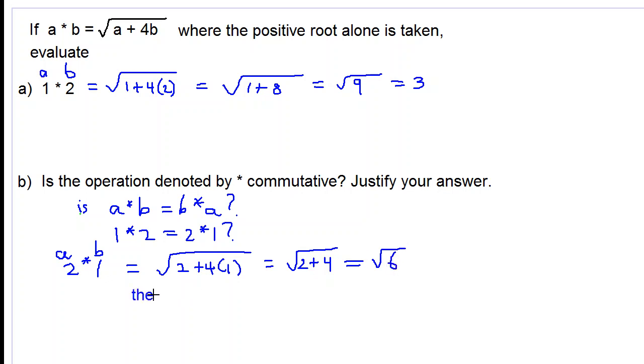Therefore, a star b is not equal to b star a, since 1 star 2 is not equal to 2 star 1. The operation is therefore not commutative.